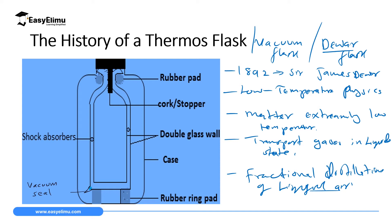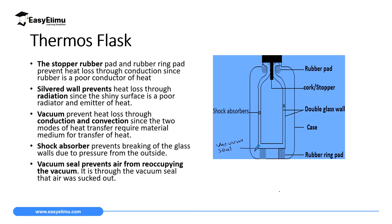We can now focus on the working mechanism of a thermos flask and how it prevents heat loss out of the flask or heat gain into it. A thermos flask has a rubber pad, made of rubber which is a poor conductor of heat. It also has a rubber stopper or cork. Then it has silvered double glass walls. We also have a case, a rubber ring pad, a vacuum seal, and a shock absorber.